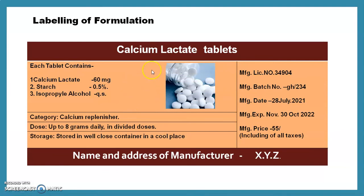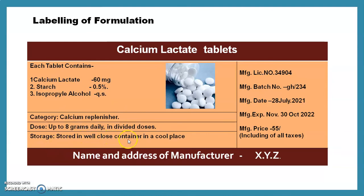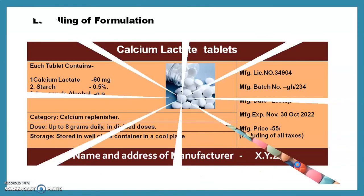Labeling of the formulation: at the top of the label, the name of preparation is written. Each tablet's ingredients should be listed on the label. Category: calcium replenisher. Dose: up to 8 grams daily in divided doses. Storage: store in a well-closed container in a cool place. Manufacturing details include manufacturing lesson number, batch number, date, expiry date, and price. At the bottom of the label, the name and address of the manufacturer should be mentioned.